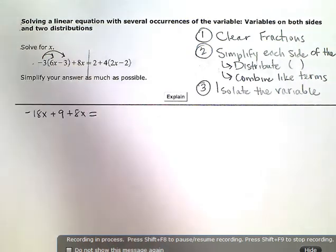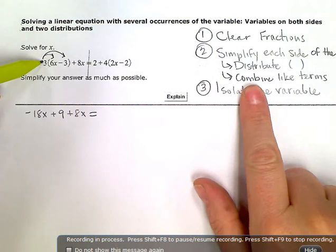Before we move on, let's combine like terms if we can. We distributed, so let's stay here on the left side and combine like terms. I have negative 18x plus 8x, they're both x terms, so I can combine those two together.